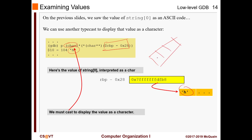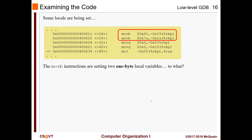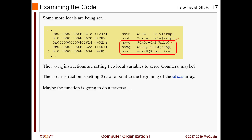So rbp-28 holds a pointer that points to our string passed as a parameter. Looking at what else is in the code: we put 0x61 into one variable and 0x7a into another. Typecasting 0x61 to char gives us 'a', and 0x7a gives us 'z'. So we're working with the ASCII values of 'a' and 'z'. Two other variables are set to zero — these are likely loop counters or iterators.